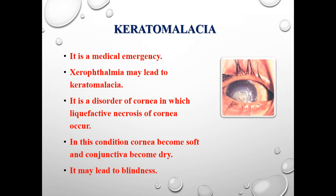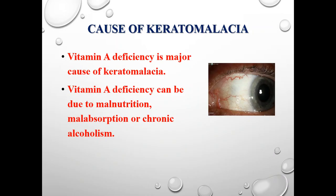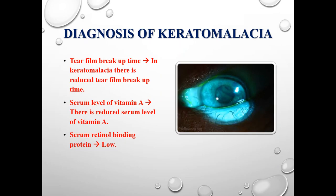Keratomalacia may lead to complete blindness. The main cause of keratomalacia is deficiency of vitamin A in our body, which may be due to malnutrition or malabsorption. Doctors may diagnose this disease by some tests, such as the tear film breakup time test, in which they check the dryness of the cornea by measuring how much time it takes to evaporate a single tear. Keratomalacia can also be diagnosed by checking the serum level of vitamin A and retinol-binding protein.